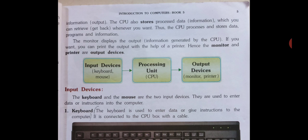The CPU also stores the processed data — matlab hum jo data process karenge woh store bhi hota hai, which you can retrieve whenever you want. Thus the CPU processes, stores data, programs and information. The monitor displays the output — jo information CPU generate karta hai woh aapko monitor pe dikhai deti hai. If you want, you can print the output with the help of a printer. Hence the monitor and printer are the output devices. To input devices: keyboard and mouse; processing: CPU; output devices: monitor and printer.